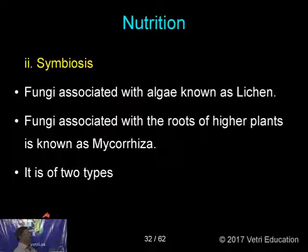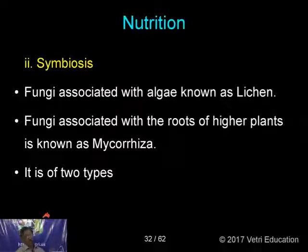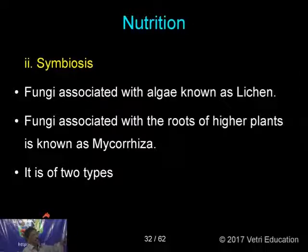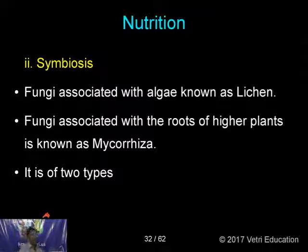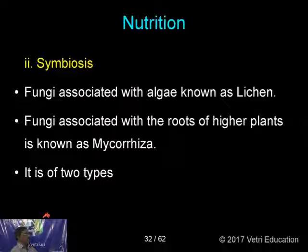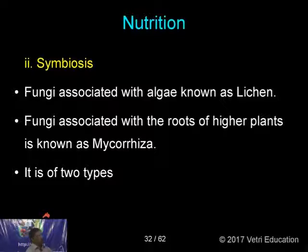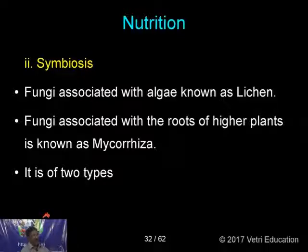The second type of heterotrophic nutrition is symbiosis — two organisms live together and are mutually benefited. Fungi having a symbiotic association with algae form Lichen, which will be discussed separately. Fungi associated with roots of higher plants — gymnosperms and angiosperms — form Mycorrhiza. Myco means fungi, rhiza means root. The association of fungal hyphae with the roots of higher plants is known as Mycorrhiza.